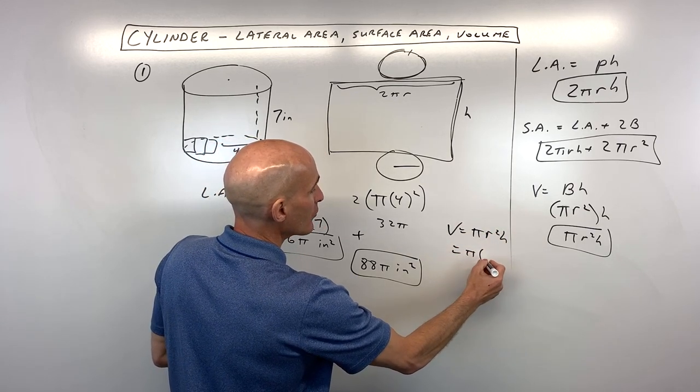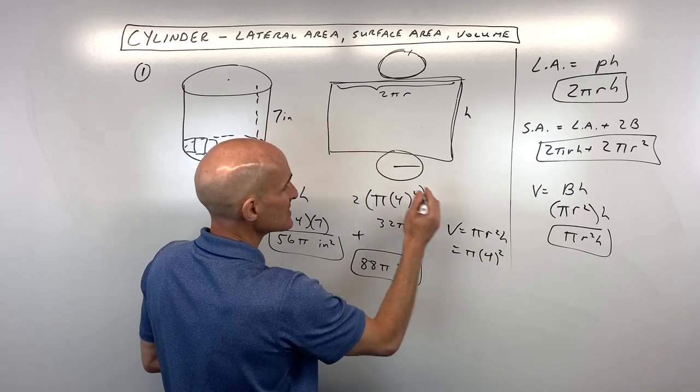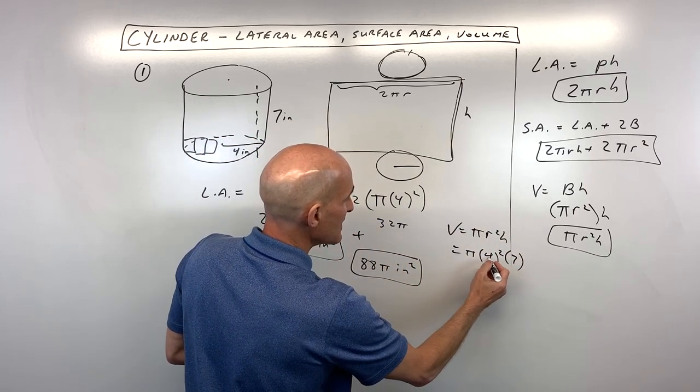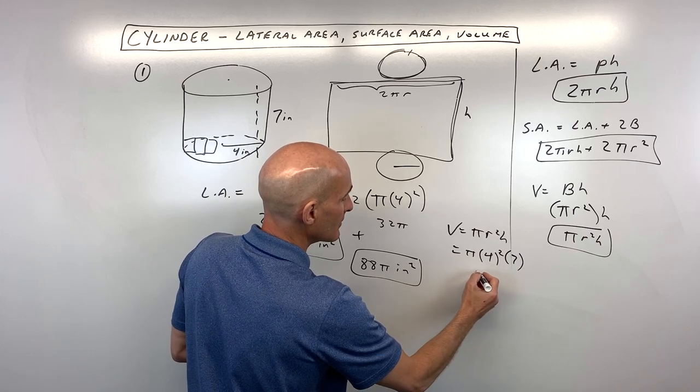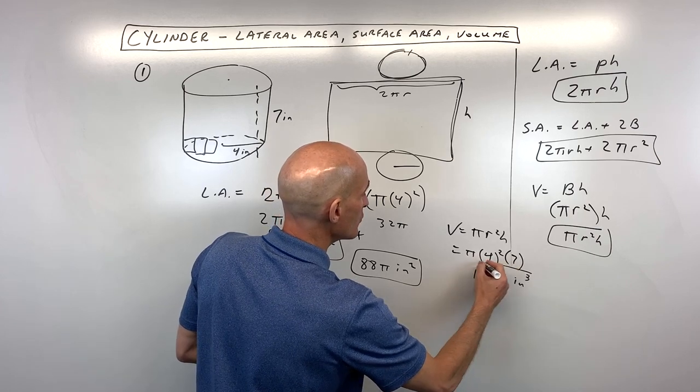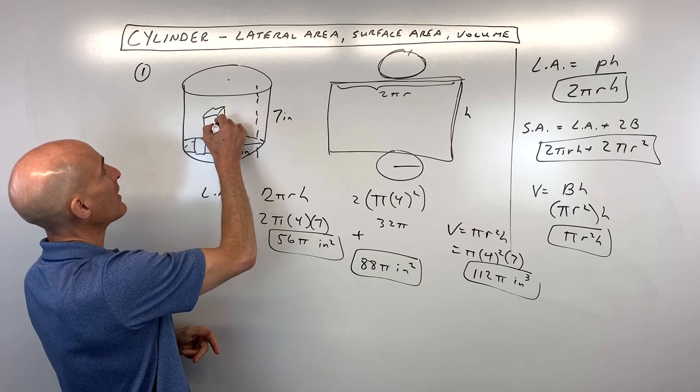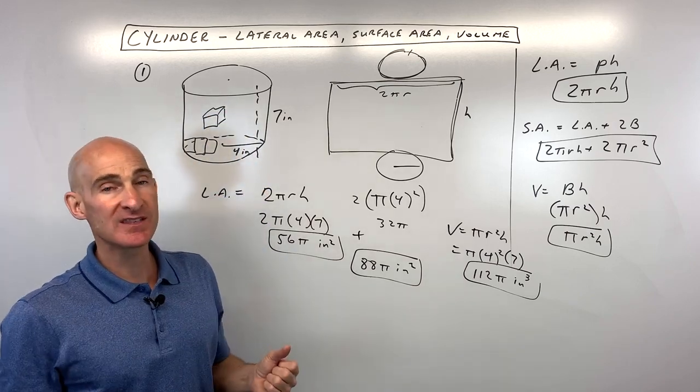The radius we said was 4 squared, and the height is 7. So let's see, that's going to be 16 times 7, which is 112π inches cubed. So it's like you're filling this up with little 1×1×1 ice cubes, and that's how many would fill up the inside of that glass.